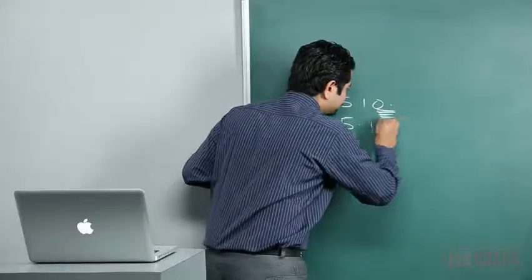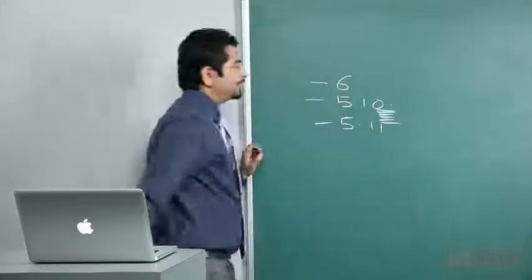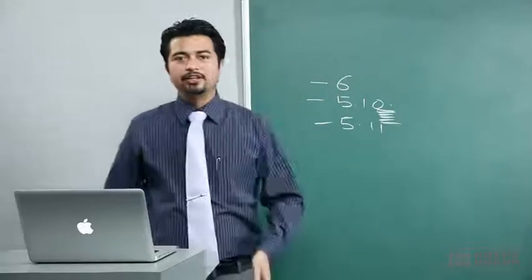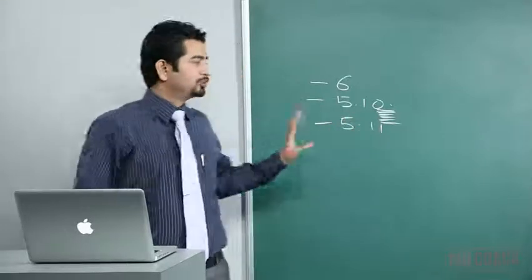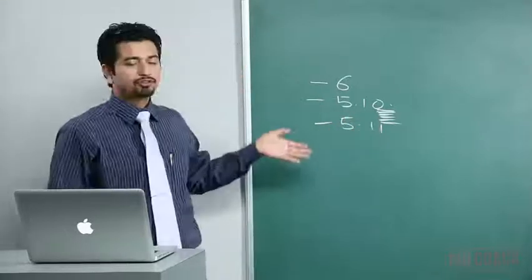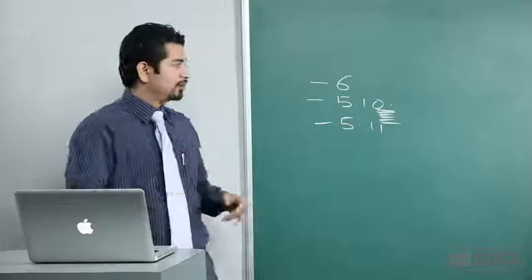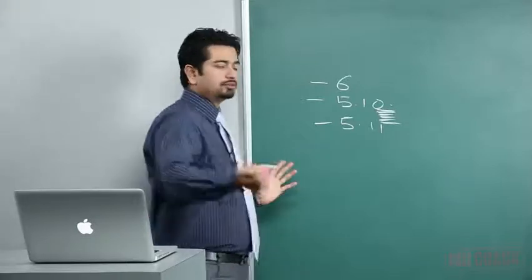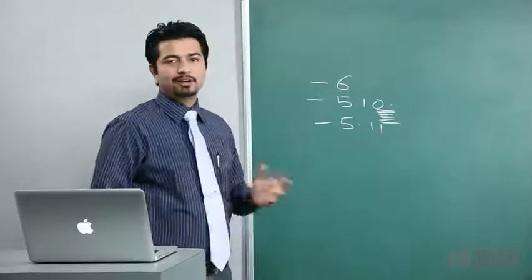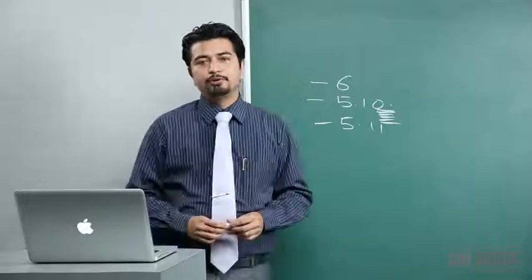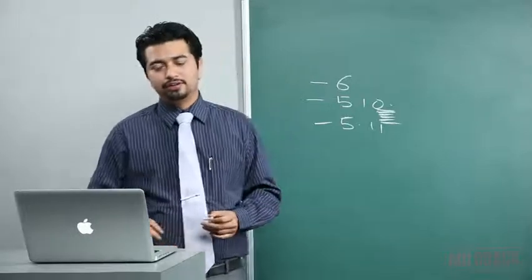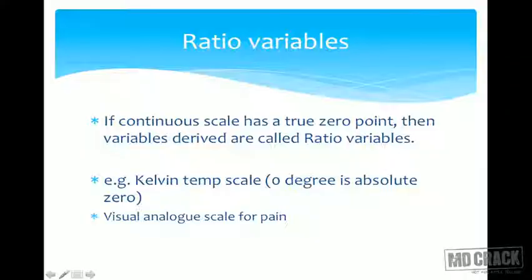Continuous variables can have infinite values in between — they are not mutually exclusive and not ordinal. Numbers from one to infinity are continuous variables. Ratio variables are numbers where an absolute zero is defined. A notable example is the Visual Analog Scale for pain, also called the VAS scale.